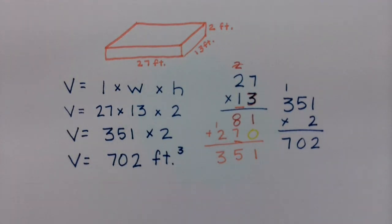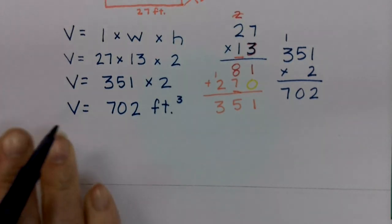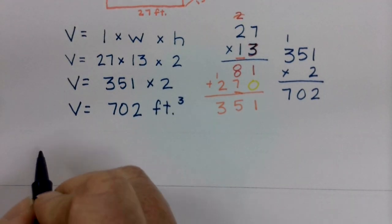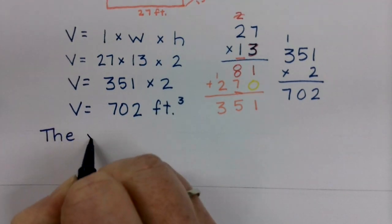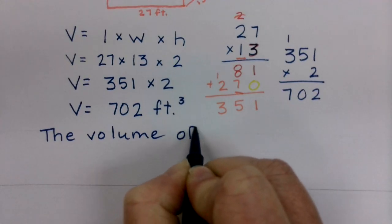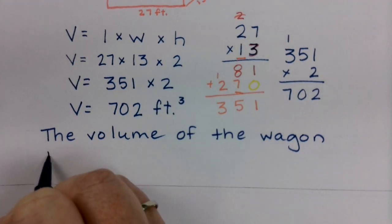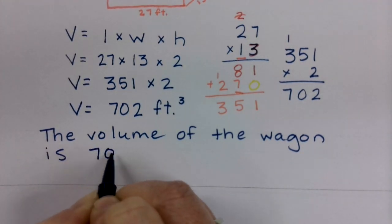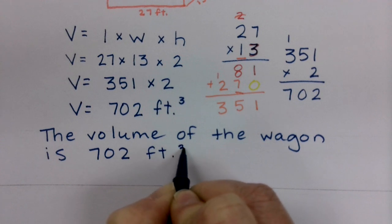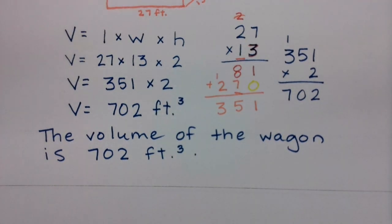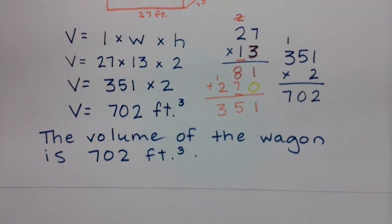We are asked, what is the volume of the wagon? Let's write one sentence that gets back to the context of our question. The volume of the wagon, notice how I'm restating from my question, the volume of the wagon is 702 feet cubed. In this way, I am a thorough mathematician. I relate my number back to the actual prompt and restate exactly what that number is in context of the situation.